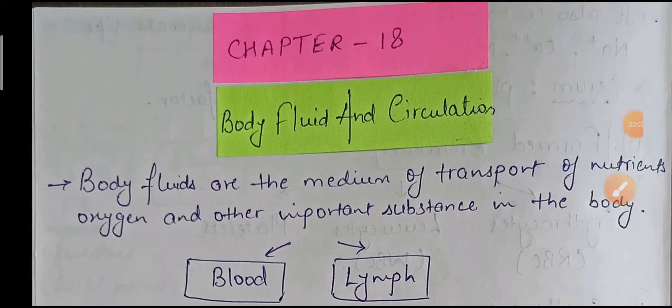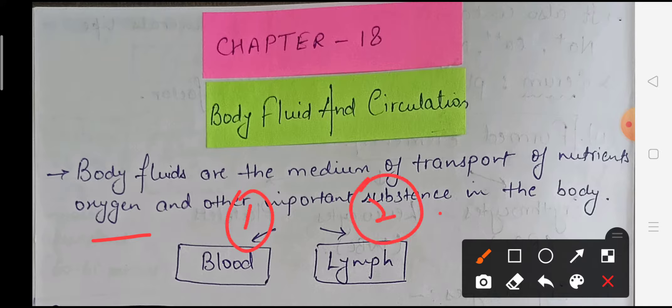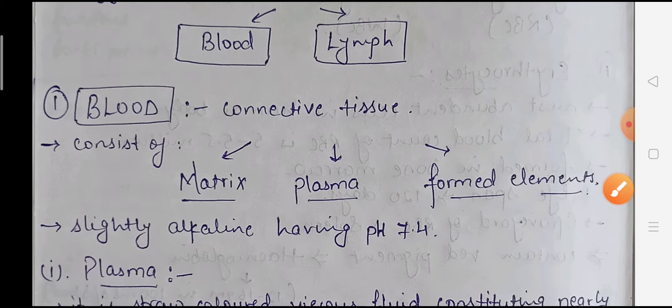Hello everyone and welcome back to our channel Biology Impulse. Today in this session we are going to discuss Chapter 18 of Class 11th, that is Body Fluid and Circulation. The body fluids are the medium of transport of nutrients, oxygen, and other important substances in our body. There are two main types of fluid found in our body: blood and lymph.